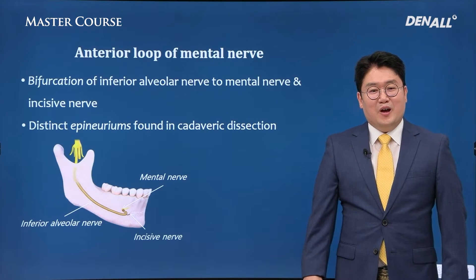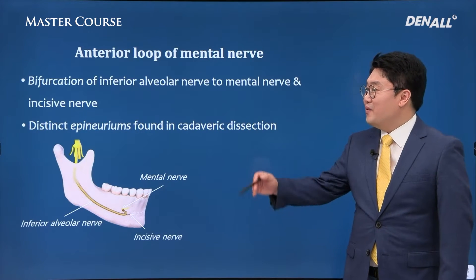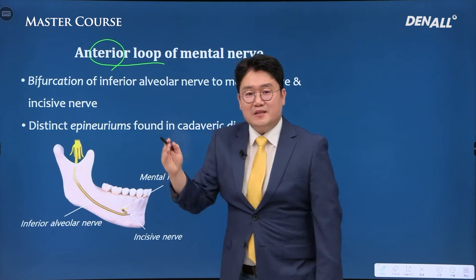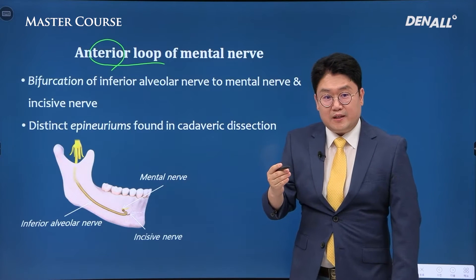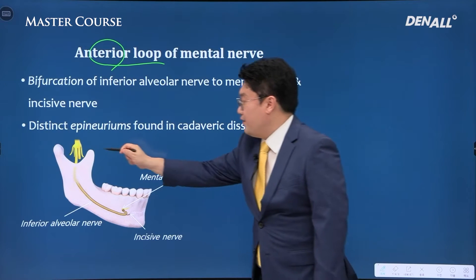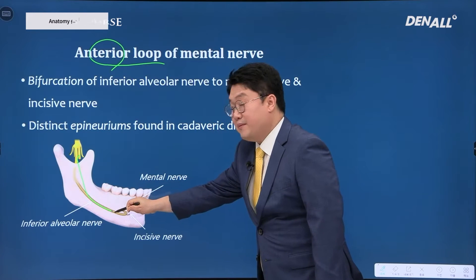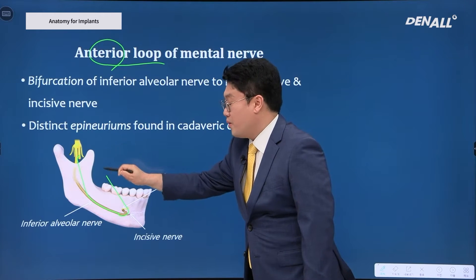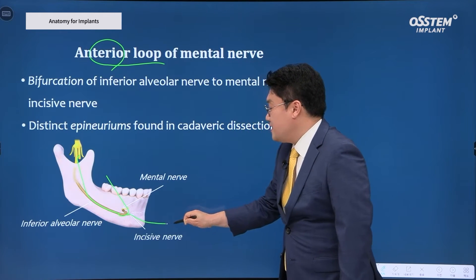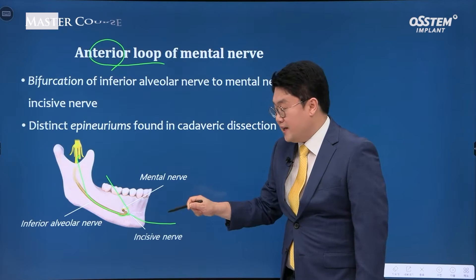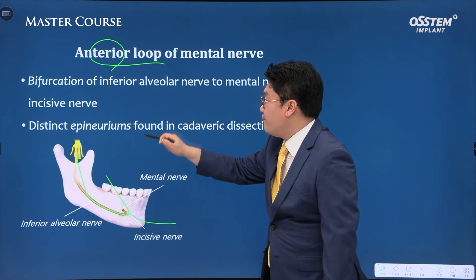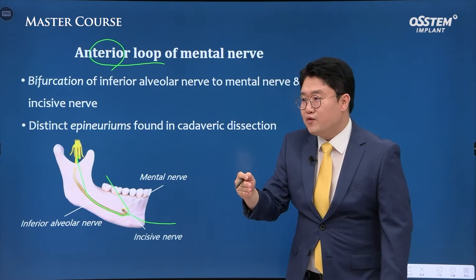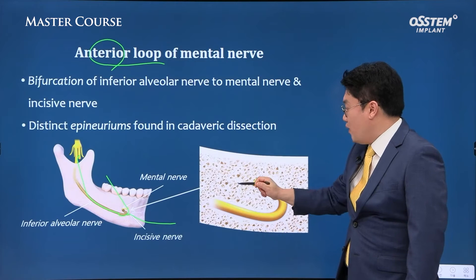I have thought long and hard about what to discuss. I am going to talk about the anterior loop of the mental nerve. As the inferior alveolar nerve progresses superiorly, it becomes the mental nerve, and below that there is the incisive nerve. Upon bifurcation, the mental nerve forms a loop, and this is referred to as the anterior loop.